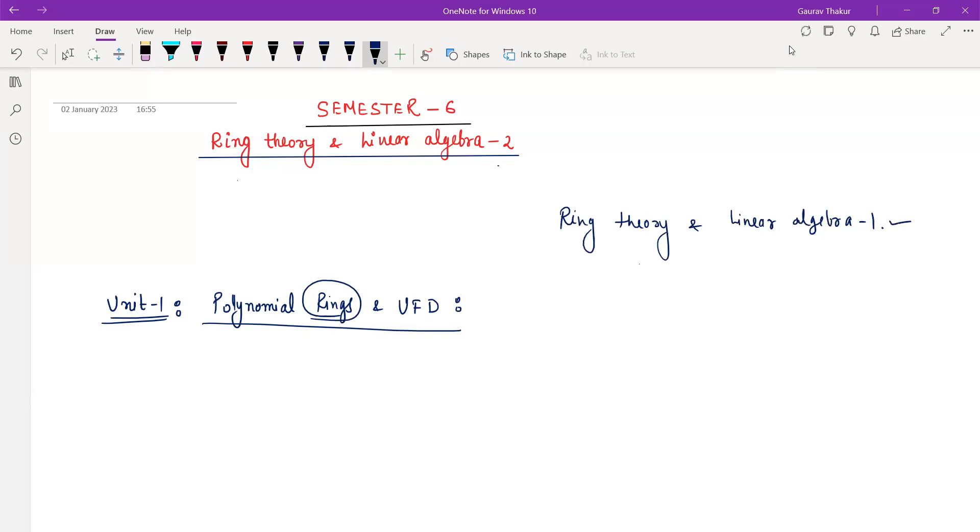Ring definition, obviously. Rings related definitions which we have done in semester 4. The basics: unity, commutative rings, at least the idea also; unit of ring, zero divisors, integral domain, field, ideal, maximal ideal, minimal, prime ideal, principal ideal domain and also a few results based on the ideals.